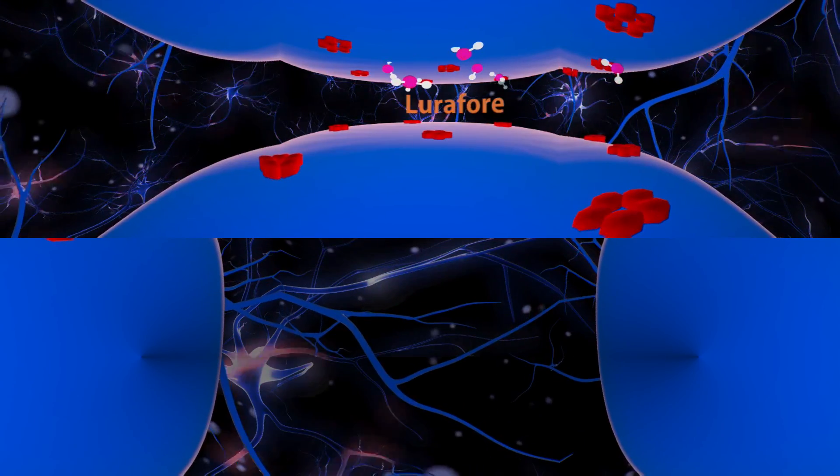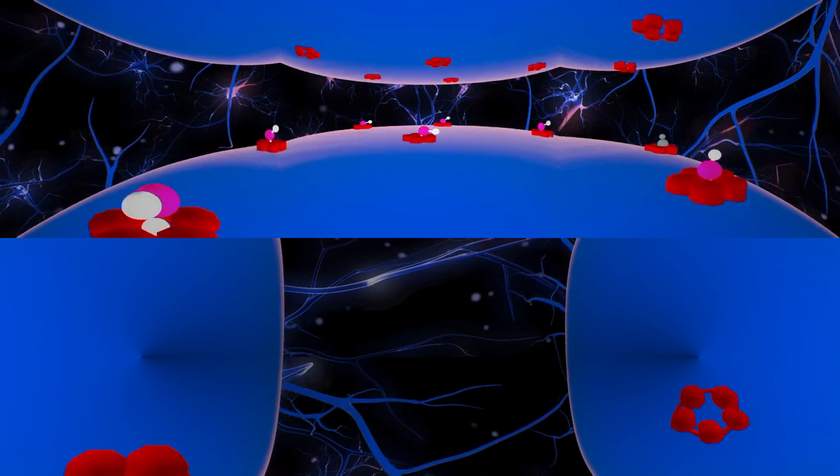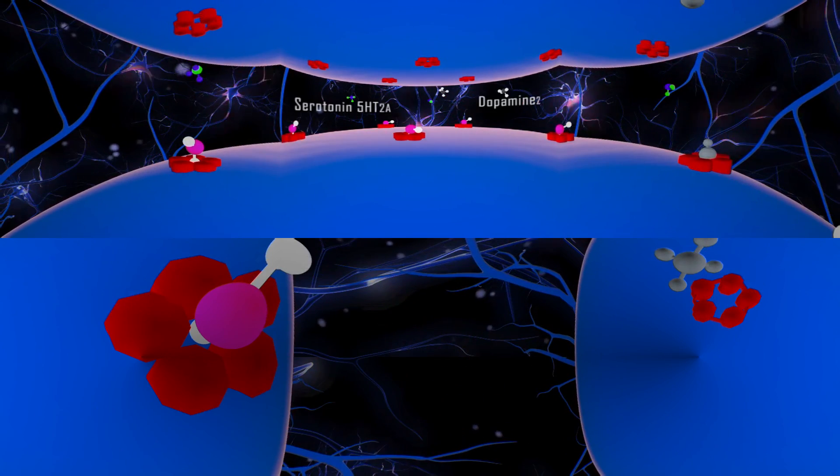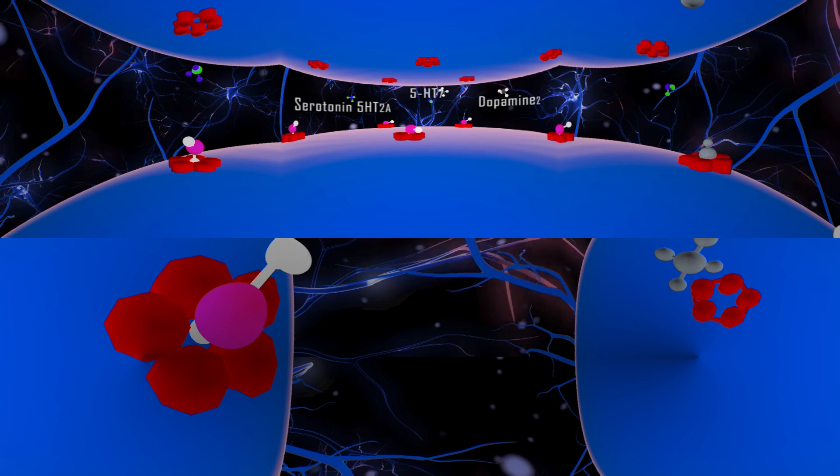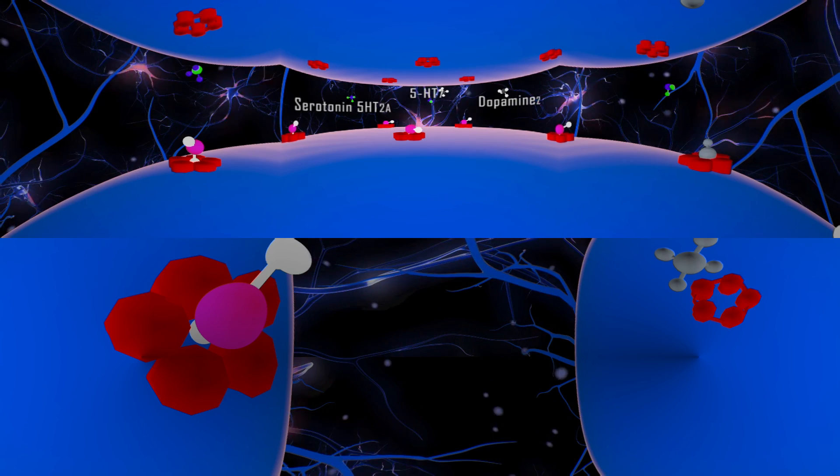Lurifor produces its anti-psychotic effect by blocking dopamine 2, serotonin 5-H2A and 5-HT7 receptors.